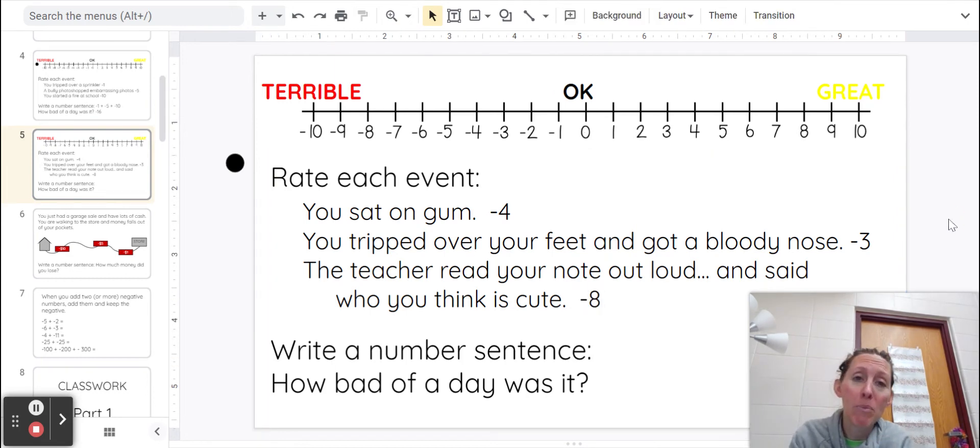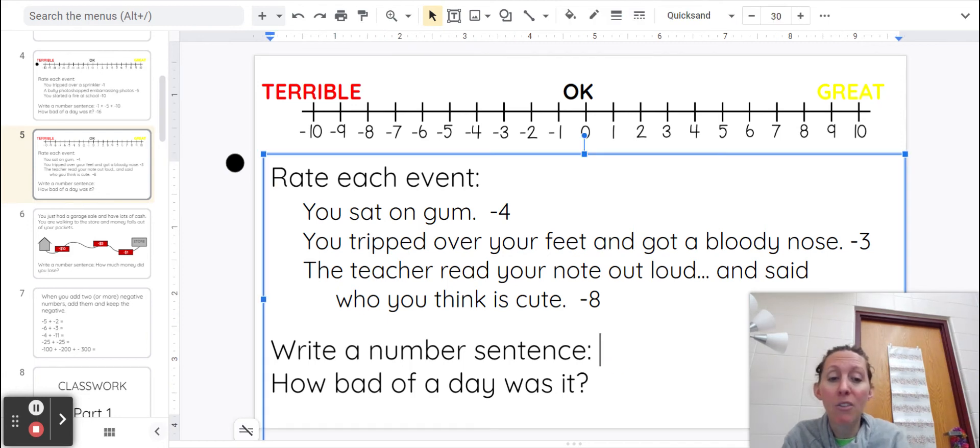But your opinion might be different. But no matter what it is, we are going to add those negative numbers together. So there's something bad that happens, negative four, and then something else bad happens, and then something else bad happens.